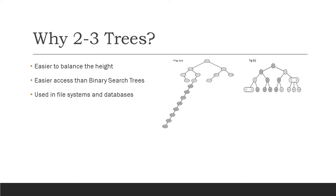So why do we need 2-3 trees? As you can see in figure 8, it's a binary search tree and it has an imbalanced height. In its worst case, binary search trees can have linear height, making binary search effectively impossible. But for the same values inserted, 2-3 trees can have balanced height as the height of the tree grows upwards.